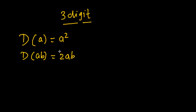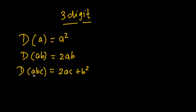These two duplexes were discussed in the last video. The third kind of duplex, which I am introducing for the first time, is the duplex of a 3-digit number. That is, d(abc) = 2ac + b². To remember this: take a times c, double it, and add the square of the middle digit b. These are the three kinds of duplexes you need to know to determine the square of a 3-digit number in the fastest possible way.